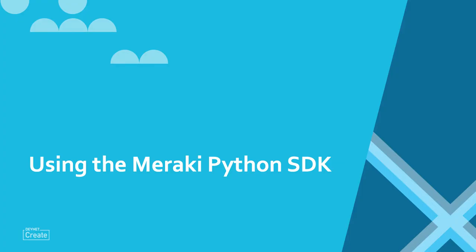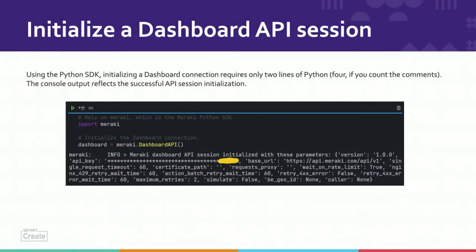Now that the SDK is installed, let's look at actually using it. Here we can see the first benefit of using the Python SDK: initializing a dashboard connection requires only two lines of Python. In this example there are some comments, so technically four lines. The console output at the bottom, which starts with 'Meraki: info', reflects the successful API session initialization. The Python SDK will automatically check our environment variables for a key named MERAKI_DASHBOARD_API_KEY, like we discussed earlier, and use it to initialize our dashboard API session.